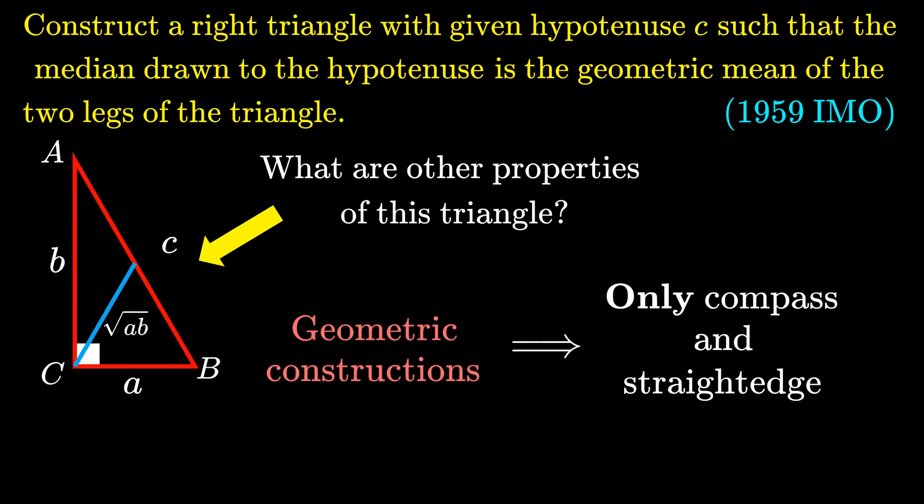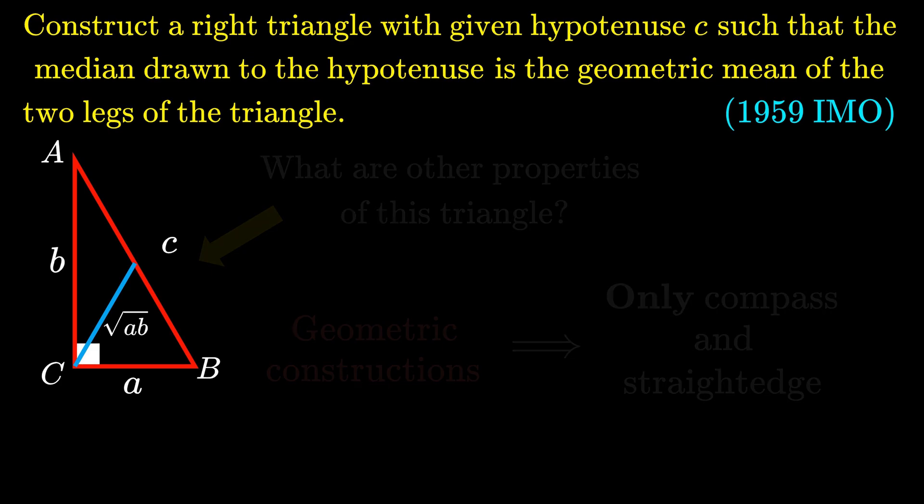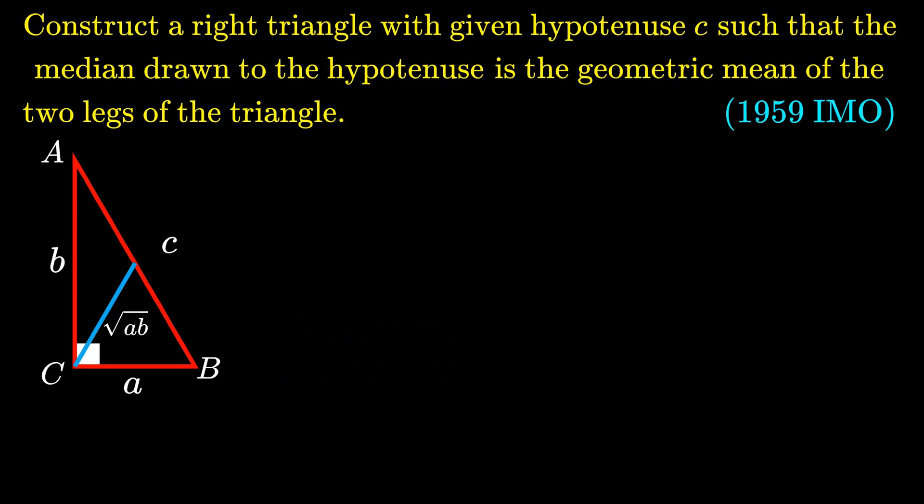Let's consider the desired right-angled triangle ABC with hypotenuse C and the other two lengths A and B, with the median as √(AB). The first thing we know is that C² = A² + B² by the Pythagorean theorem.